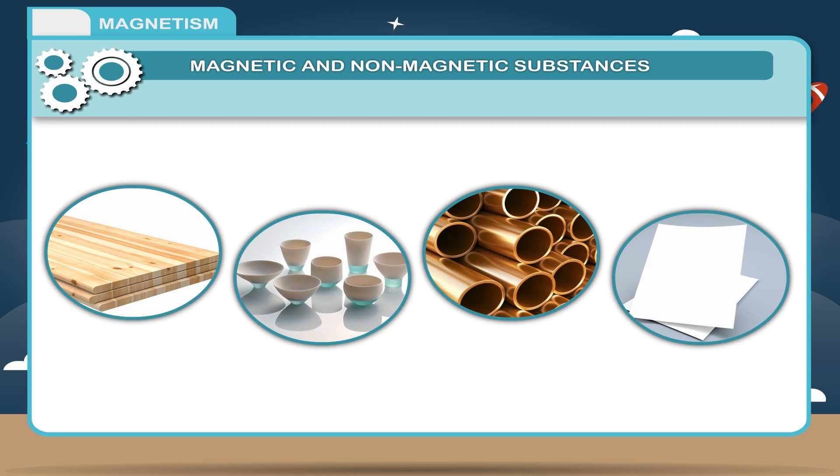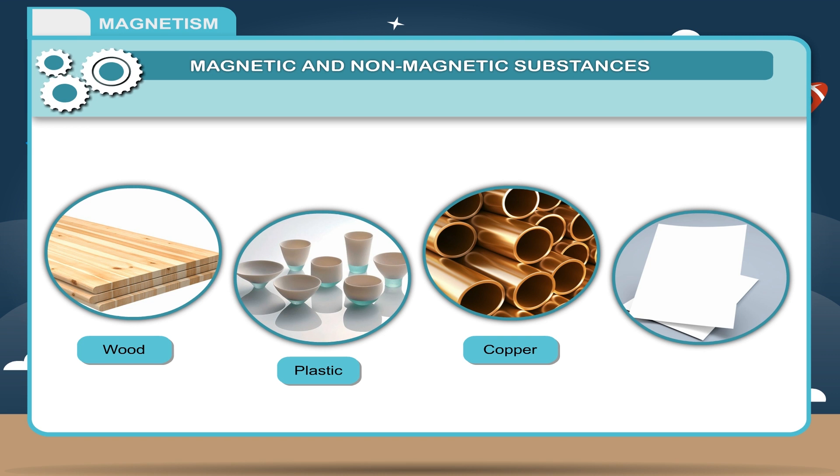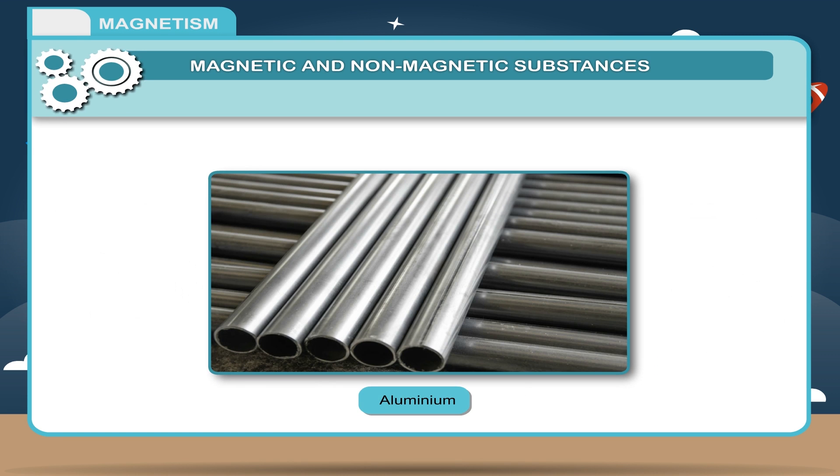The substances which are not attracted by a magnet are called non-magnetic substances. Examples: Wood, plastic, copper, paper and aluminium are non-magnetic substances.